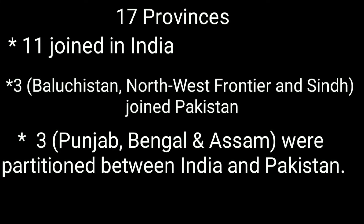After the partition, 11 provinces joined India. Three provinces — Baluchistan, Northwest Frontier, and Sindh — joined Pakistan. The remaining three — Punjab, Bengal, and Assam — were partitioned between India and Pakistan.